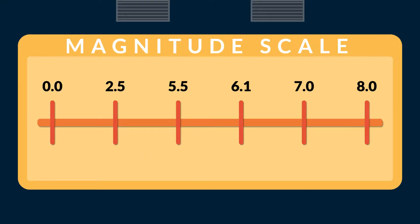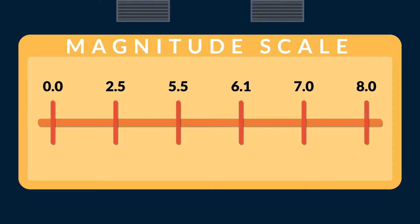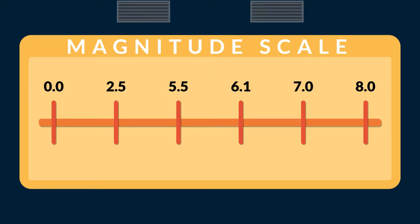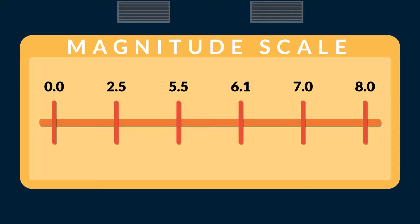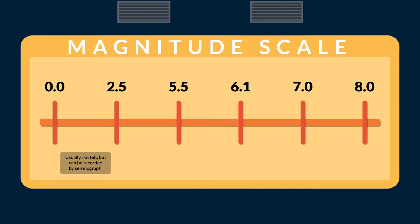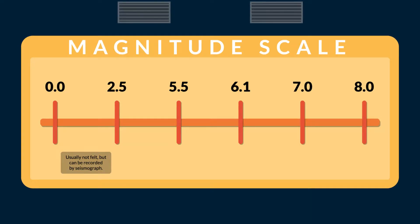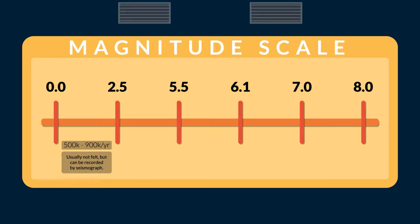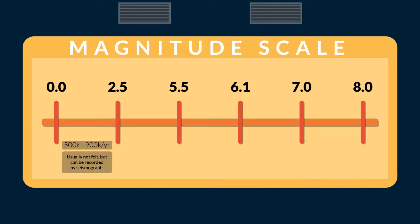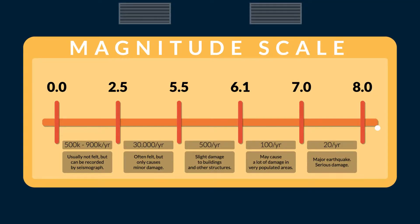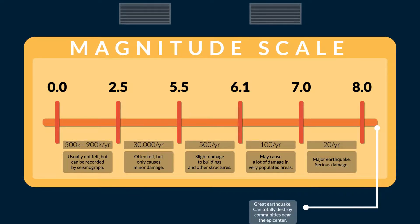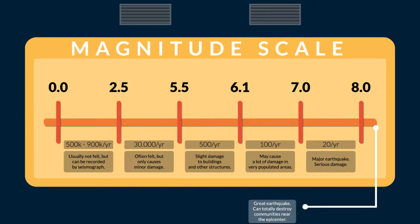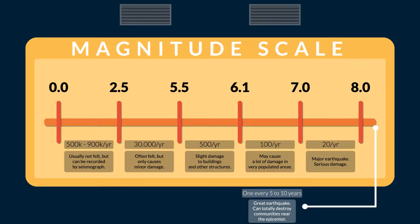Regarding the magnitude scale we will look at both ends of the scale, for the rest you can pause the video. The magnitude 2.5 or less means the earthquake is usually not felt by humans but can be recorded by seismograph. We have around 500,000 to 900,000 of these happening each year. On the other side magnitude 8 or greater means great earthquake that can destroy communities near the epicenter. Great earthquakes happen once in every 5 to 10 years.